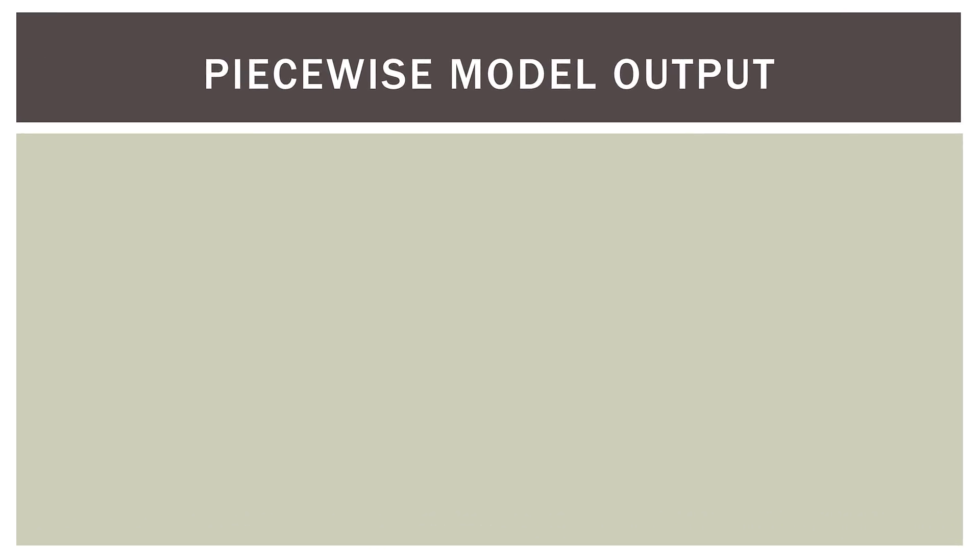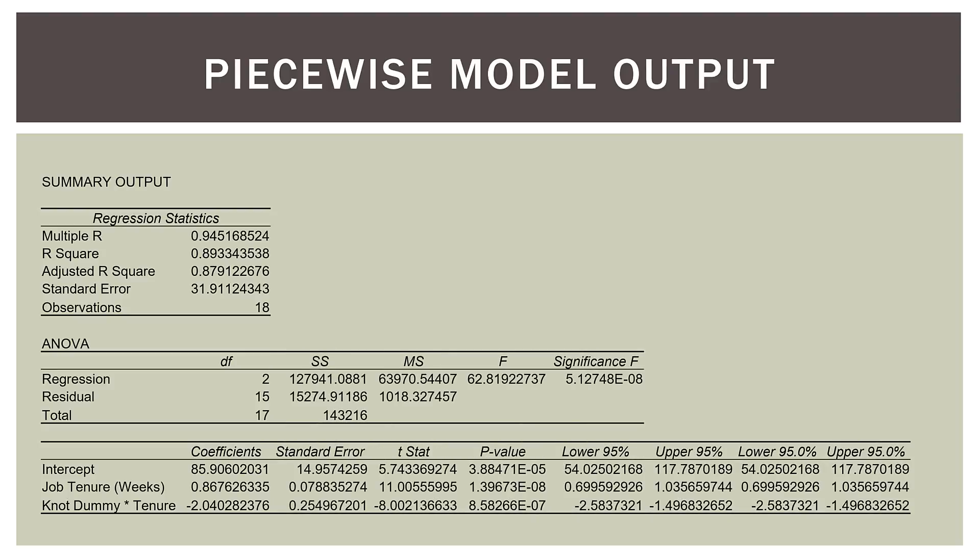Here is the piecewise model output using those three variables. We now have an R-squared of 0.8933 and an adjusted R-squared of 0.8791 — both higher than the quadratic model. The standard error is 31.91, which is lower than in the quadratic model, which is good. The total sum of squares in the ANOVA table is still 143,216 — the exact same as the quadratic model, since the total sum of squares is always the same; it's just how you allocate it between regression and error. The F-statistic is 62.82, higher than before, and the significance value is 0.00005. All p-values for the coefficients are significant. Overall, the piecewise model appears to be a better fit.